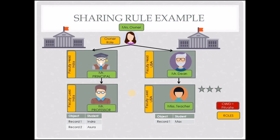Let's visualize sharing rules using an example. Consider a chain of schools with two branches, one in India and one in the US. In the Salesforce org for this school, the organization-wide default is set to private. The role hierarchy provides vertical access — Mr. Professor at the bottom reports to Mr. Principal, so all records belonging to Mr. Professor can be viewed by Mr. Principal. Similarly, Ms. Teacher's records can be viewed by Mr. Dean, and all records in both branches can be viewed by Mrs. Owner at the top of the hierarchy.